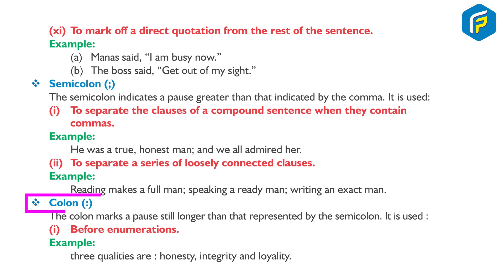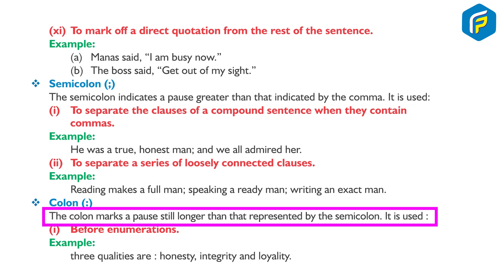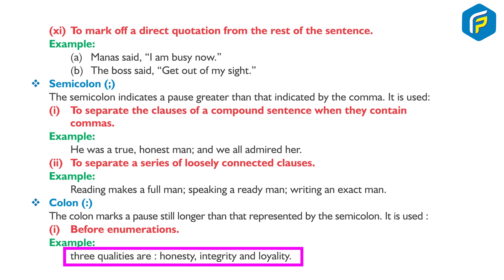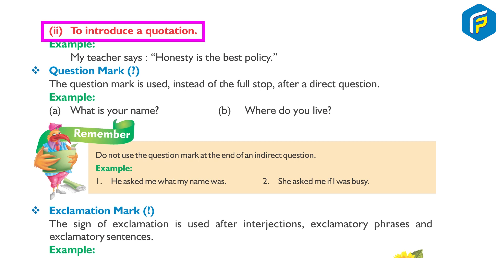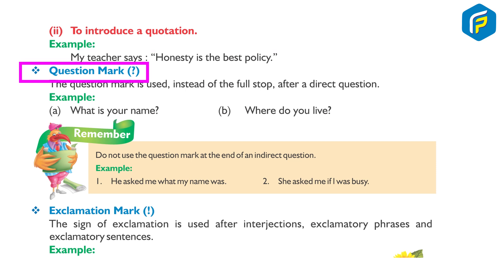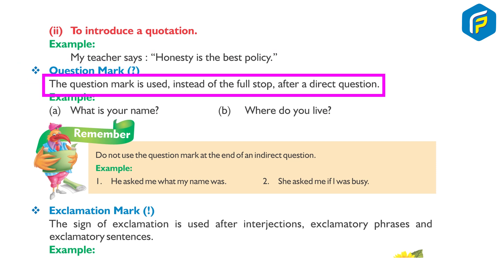Colon: The colon marks a pause still longer than that represented by the semicolon. It is used: one, before enumerations. Example: Three qualities are honesty, integrity, and loyalty. Two, to introduce a quotation. Example: My teacher says: Honesty is the best policy. Question mark: The question mark is used instead of the full stop after a direct question.